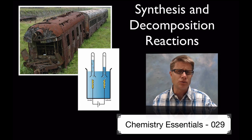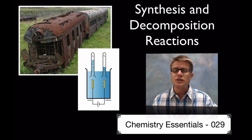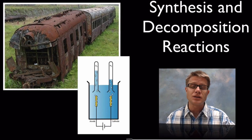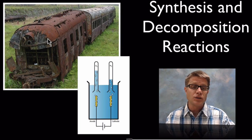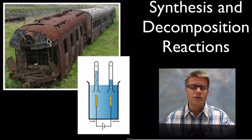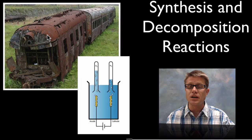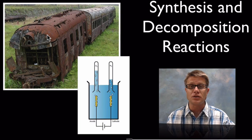If I were to ask you which of the two reactions you see on the left is a decomposition reaction, the tendency is to choose the rusting railroad car. And the reason why is it looks like it's breaking down. But if you think about it, what is rust? Rust is a combination of iron and oxygen. And so this is actually a synthesis reaction.